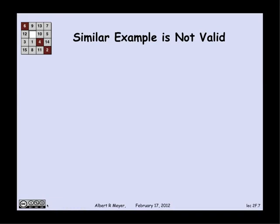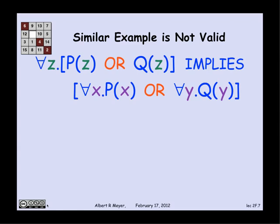Let's look at a similar example where it is possible to prove something. I can prove that something's not valid. Here's a similar looking formula. This one says that for every z, if P of z holds or Q of z holds, then for every x P of x holds or for every y Q of y holds. This one we're going to show is not valid. What it's saying is if everything has either property P or property Q, that implies that everything has property P or everything has property Q. When you say it that way, it's clearly not the case.